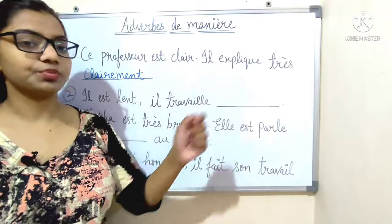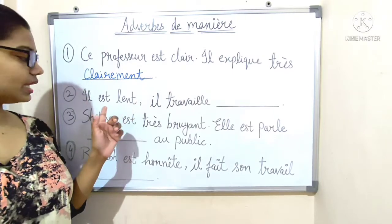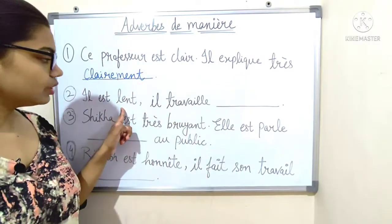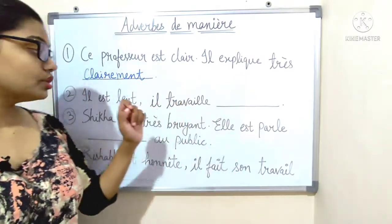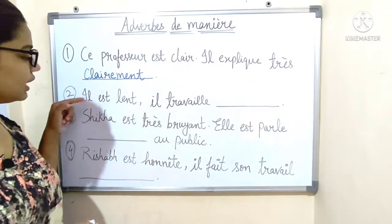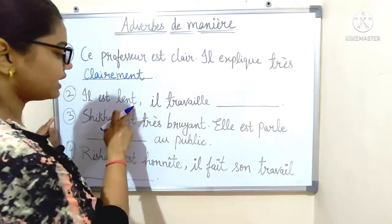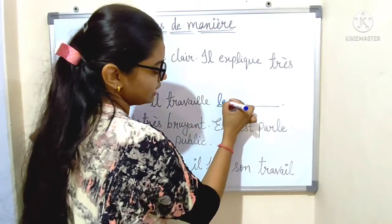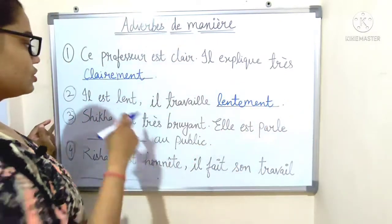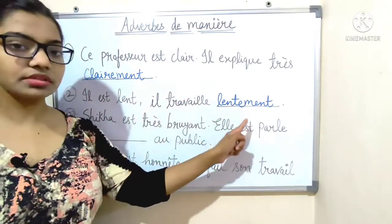Number two: 'Il est lent, il travaille lentement.' 'Lent' ends with a consonant, so we make it feminine: L-E-N-T-E, then add '-ment': 'lentement'. He is slow; he works slowly.